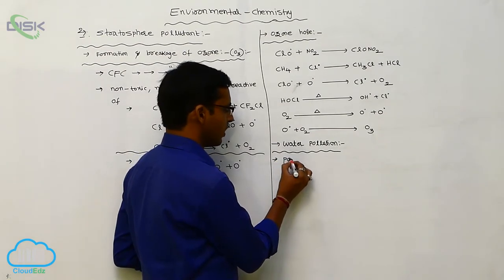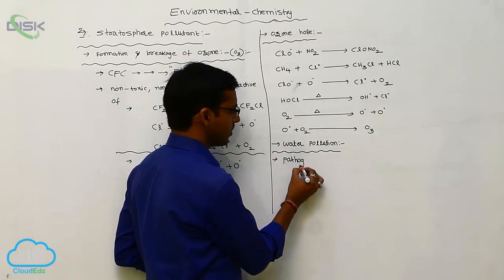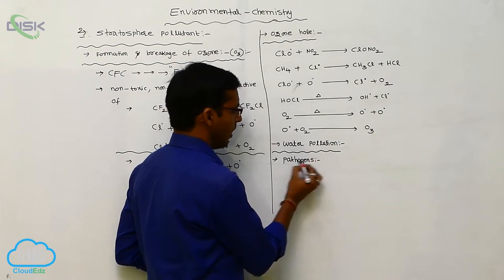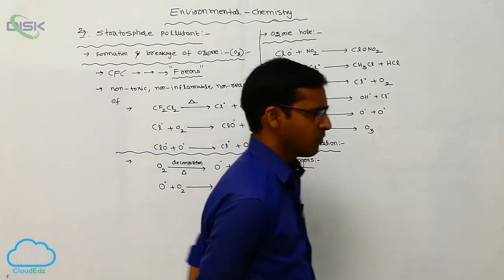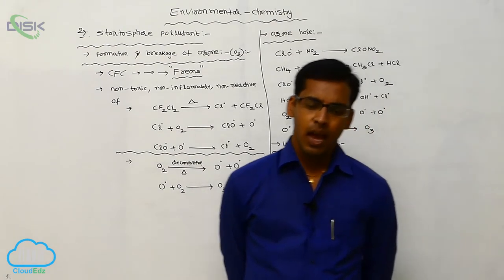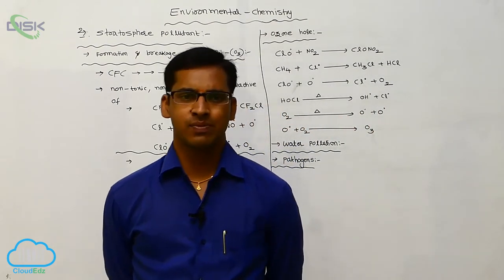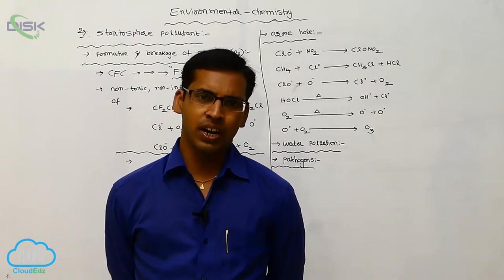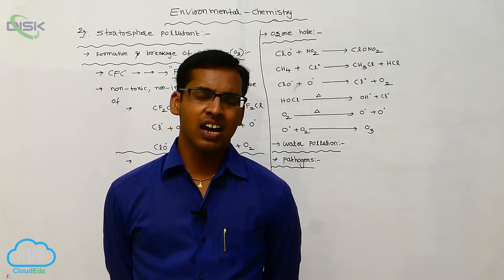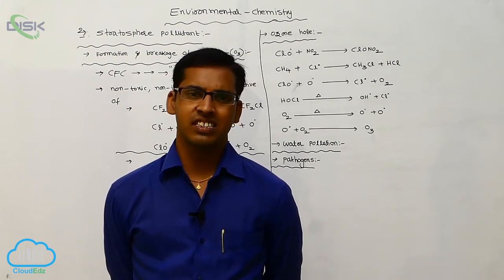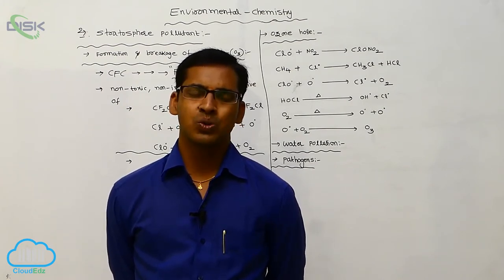So in that, factors, so in that first one is pathogens. So what are the factors or causes water pollution? In that first one pathogens. Pathogens means microorganisms. The water is polluted, the microorganisms are causes a serious disease is called as pathogens.